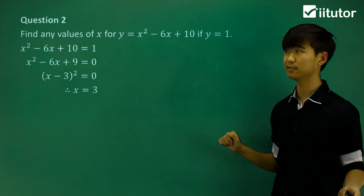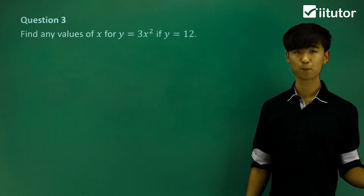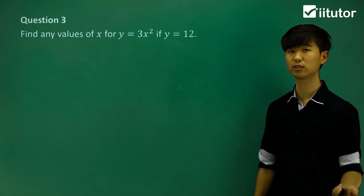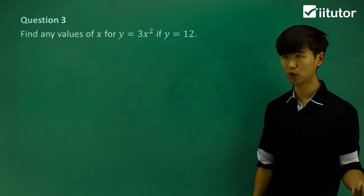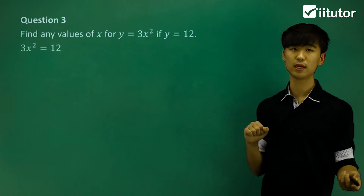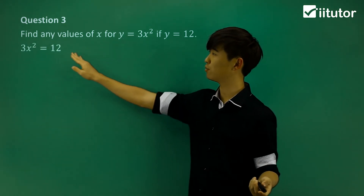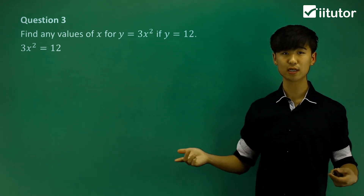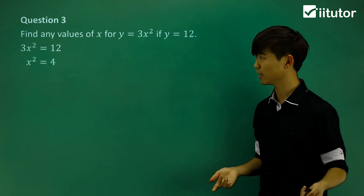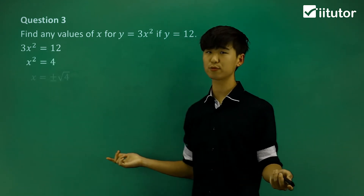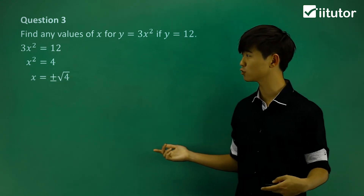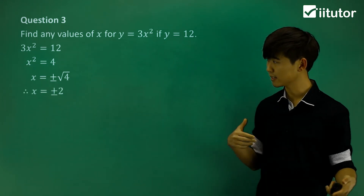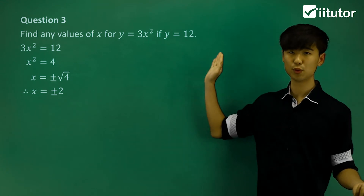So when y = 1, x = 3. Now find any values of x for the quadratic y = 3x², where the value of y is 12. Let's rewrite the equation putting y = 12 and solve for x. I want to divide both sides by 3, so we get x² = 4, then square root both sides. Be careful when we square root — we have to do plus-minus. The square root of 4 is 2, so x = ±2 when y = 12.